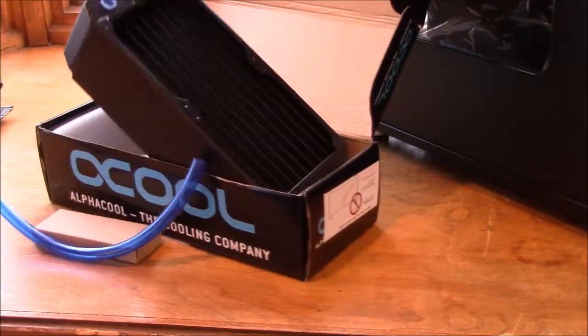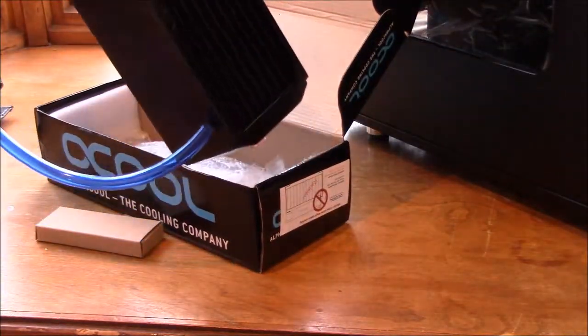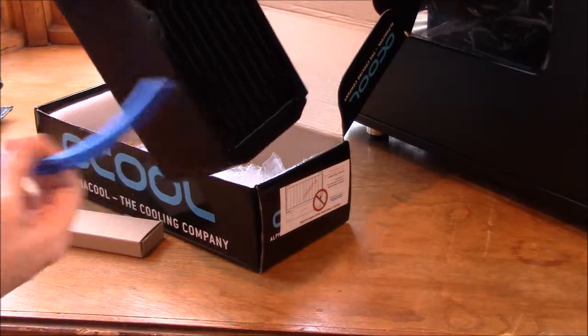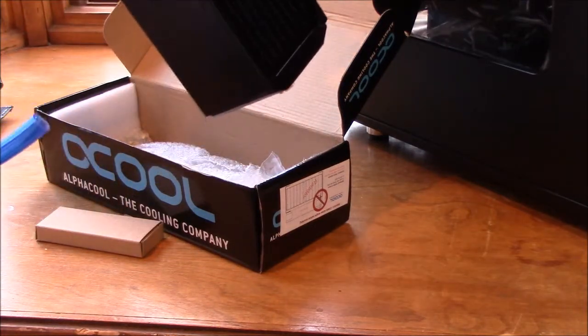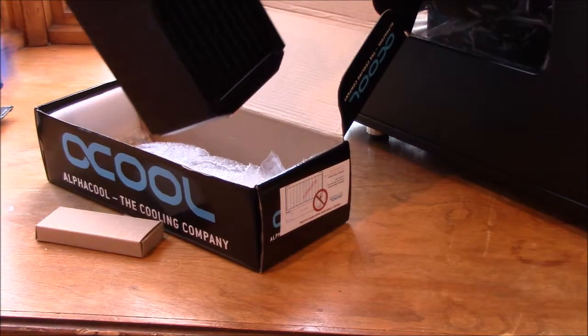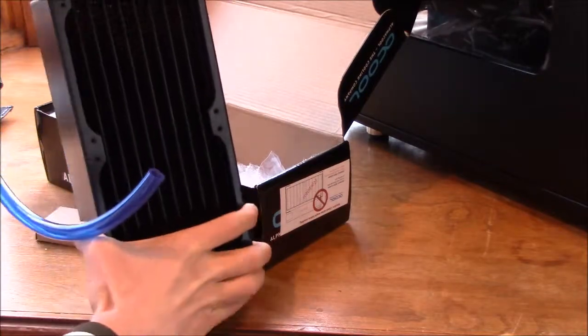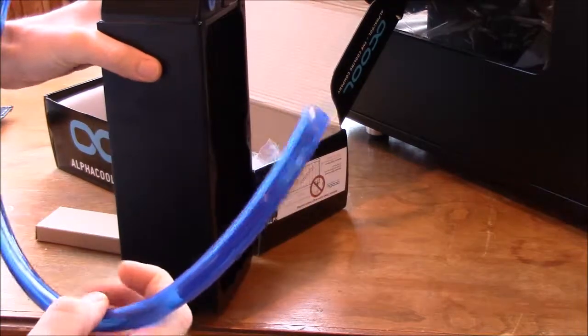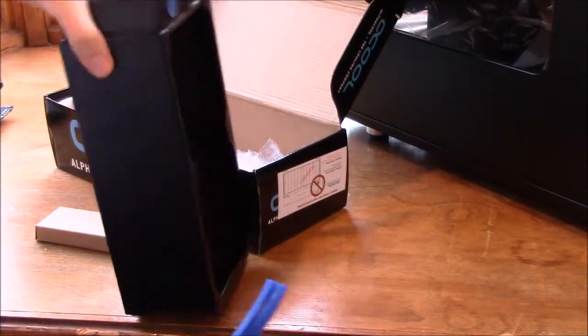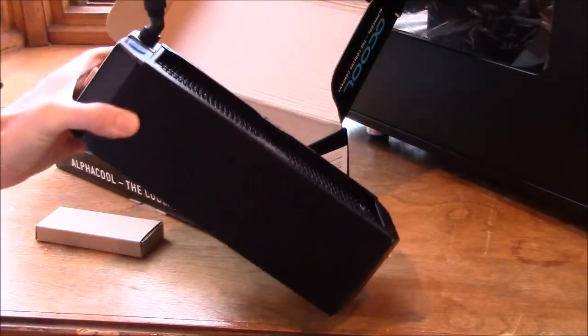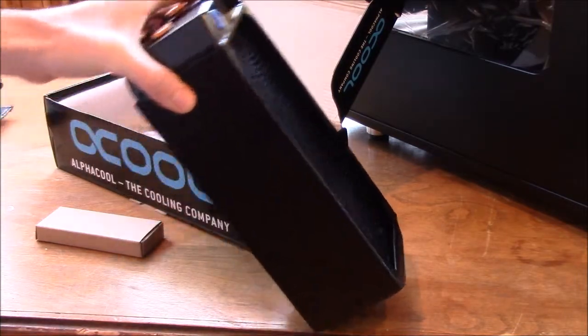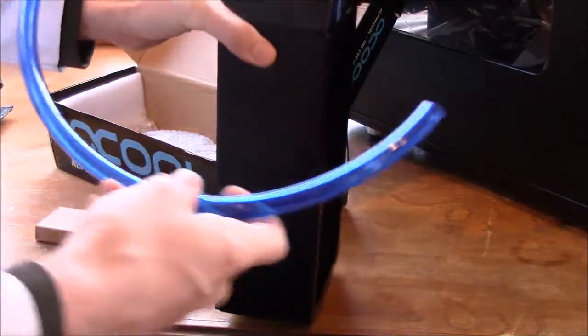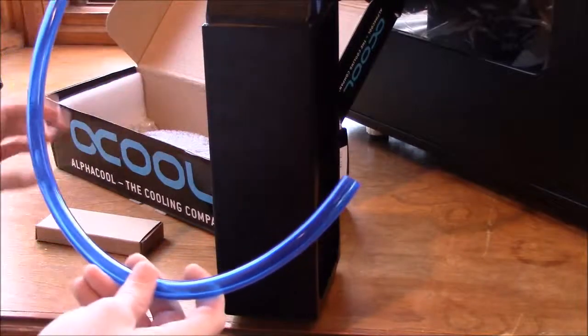So as you can see, I can pull on this tubing, you know, hang the radiator from the tubing. It's not going to fall off. It's very strong. So that was very easy to put on. And this is my AlphaCool Monsta 80mm thick radiator, the thickest radiator on the market. 240mm, I think I might have said that.